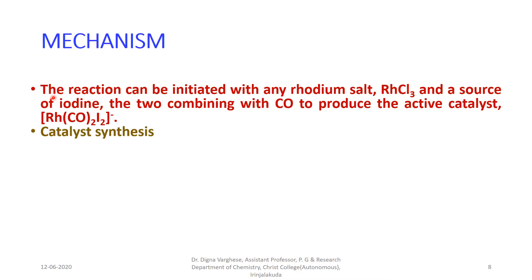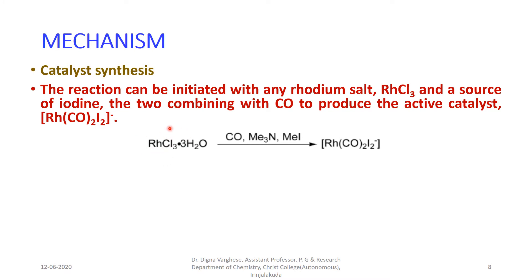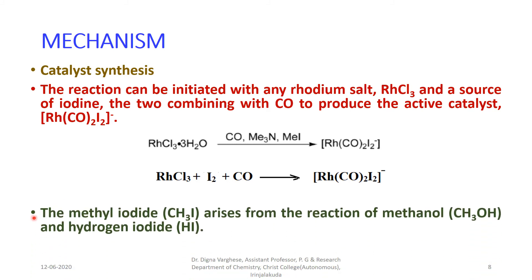Mechanism of the acetic acid process: The reaction can be initiated with any rhodium salt, say rhodium trichloride, and a source of iodine, the two combining with carbon monoxide to produce the active catalyst. The rhodium salt in the presence of carbon monoxide and a source of iodine gives the active catalyst. The methyl iodide arises from the reaction of methanol and hydrogen iodide — methanol reacts with hydrogen iodide giving methyl iodide.